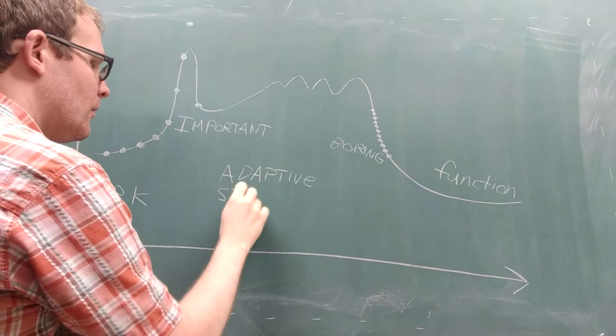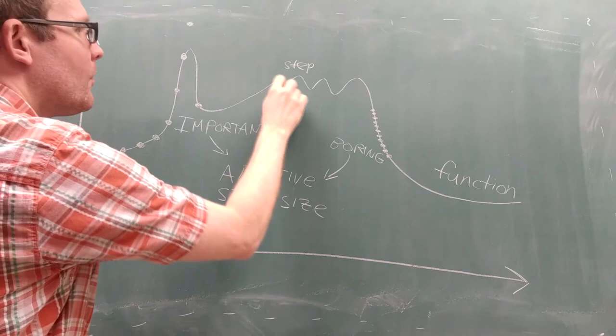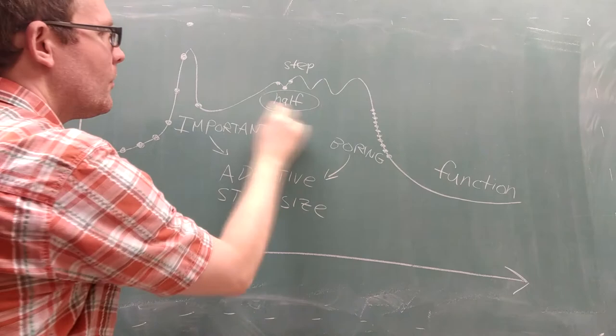This is where an adaptive step size is useful. To adapt our step size, we first check to see if taking a step of half the size would result in a significant difference. If it does, like in a region with interesting curvature, we cut the step size in half and start to move along the solution more slowly.